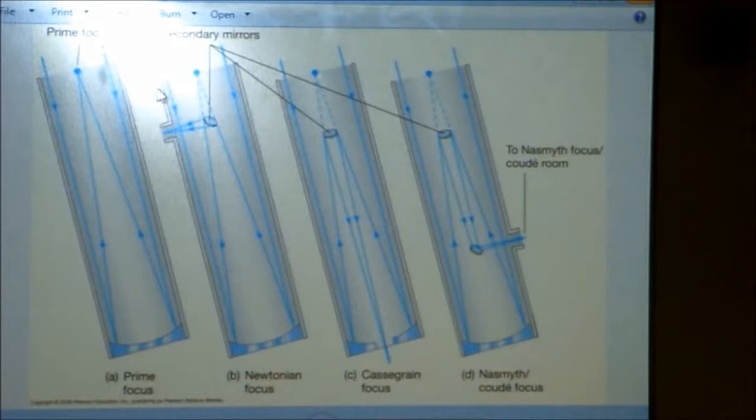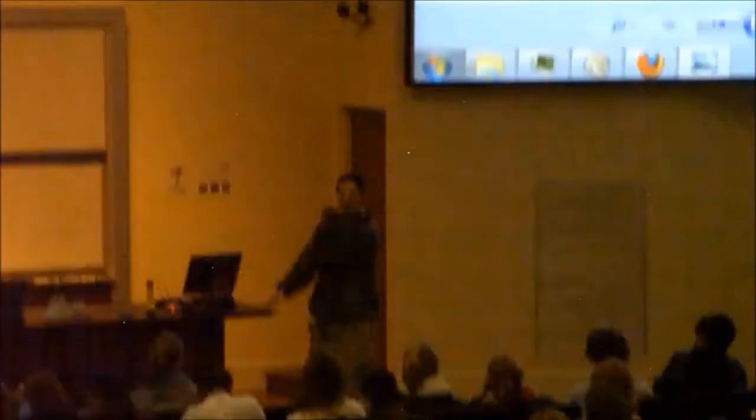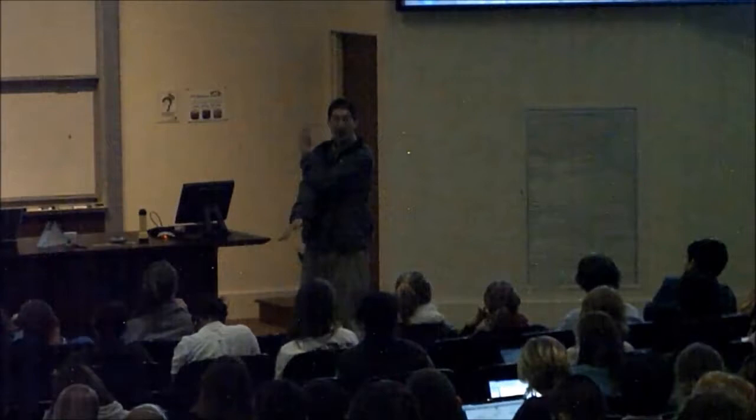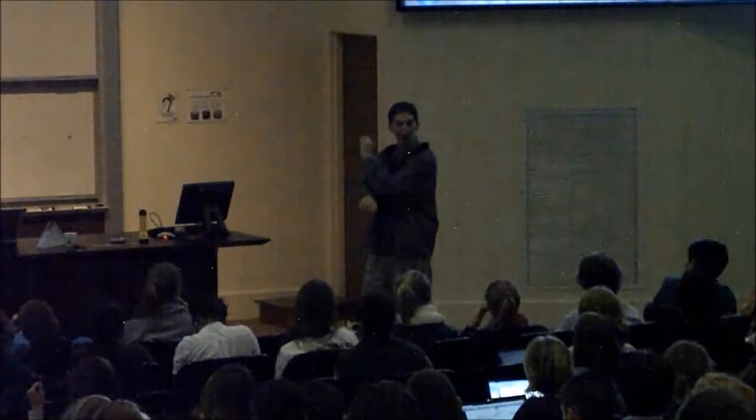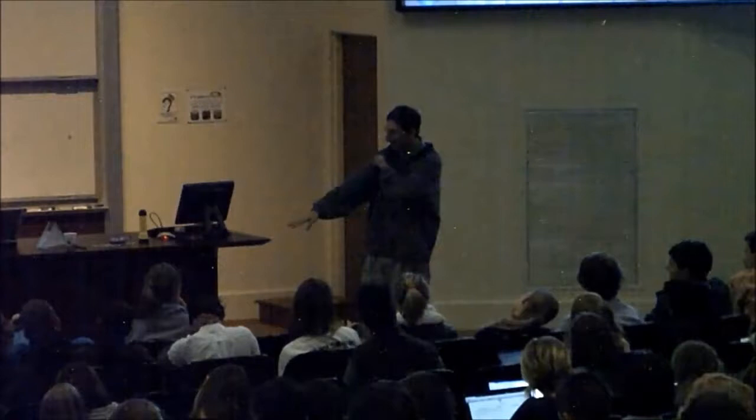Then you have this other category: Nasmyth and Coudé. You only see this with large professional telescopes. What if you have an instrument that is super heavy, too heavy to attach to the moving telescope? Sometimes we have instruments that weigh tons and fill entire rooms. You stick a third mirror in there, and that third mirror points down in the case of Coudé, points down the rotation axis of the telescope.